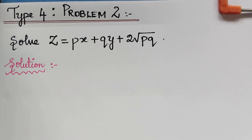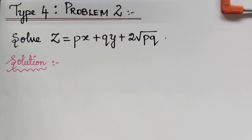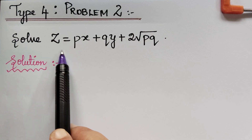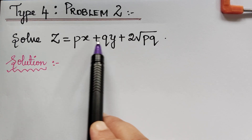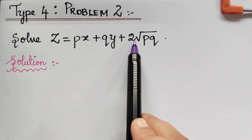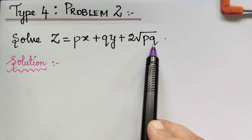Dear students, we are solving problems under non-linear partial differential equations, and here we have type 4. We are going to solve problem 2 under type 4. The question is: solve z = px + qy + 2√(pq).